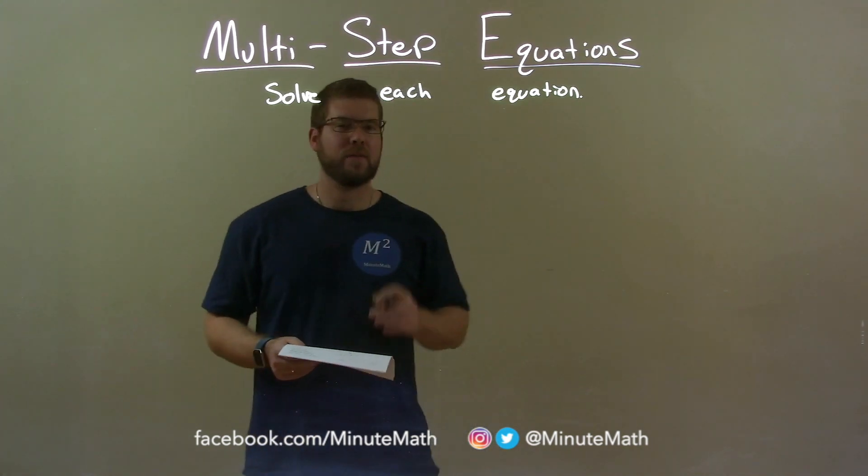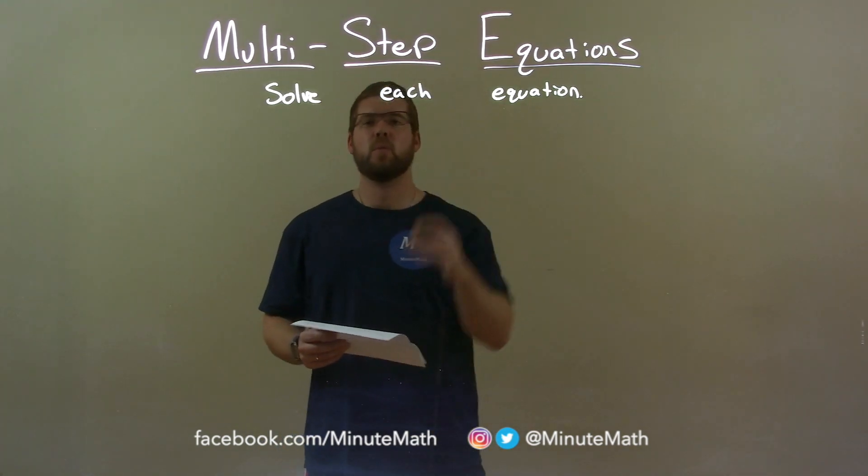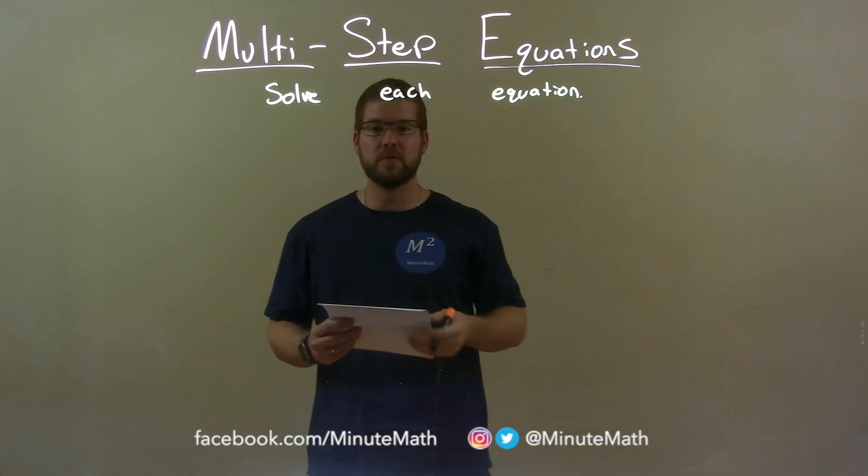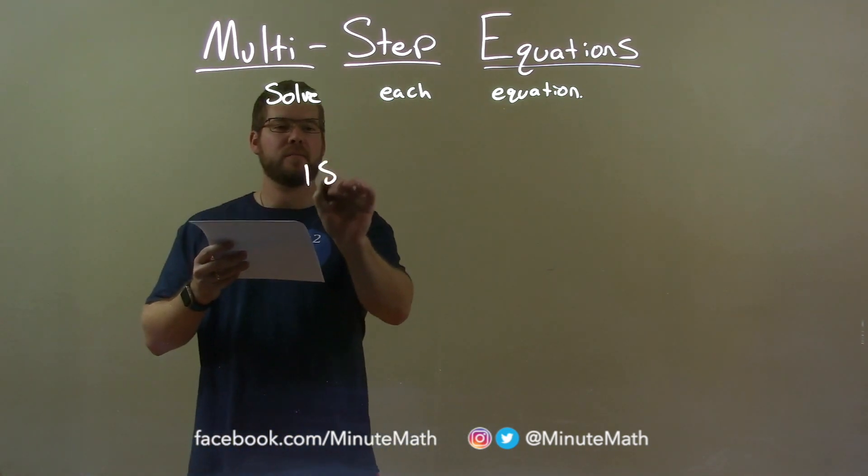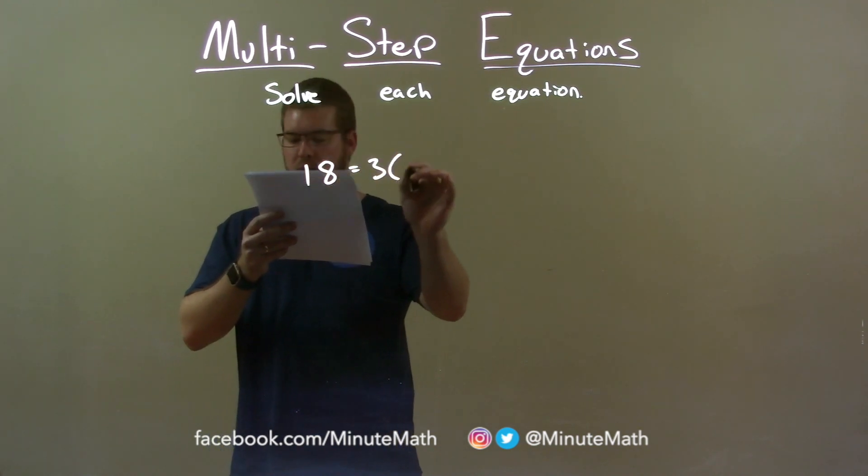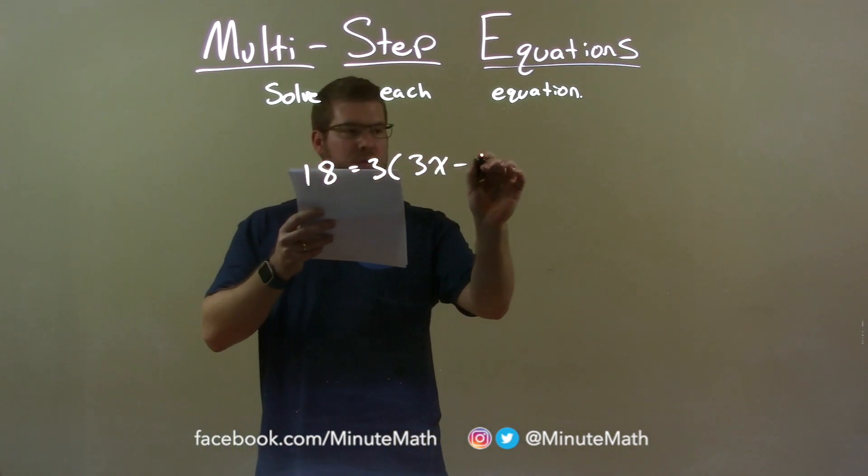Hi, I'm Sean Ginn, and this is MinuteMath. Today we're learning about multi-step equations, and we're going to solve each equation. If I was given this equation: 18 equals 3 times (3x minus 6).